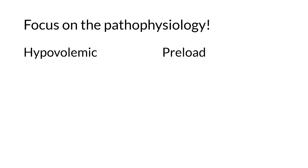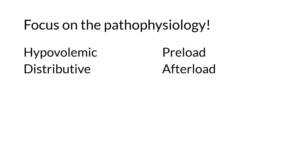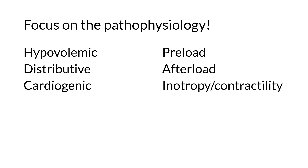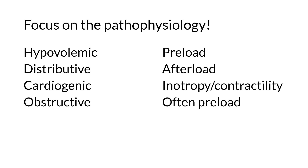Hypovolemic shock results from loss of circulating blood volume and is thus a preload problem. Distributive shock results from inappropriate vasodilation and is thus an afterload problem. Cardiogenic shock results from reduced contractility and is thus an inotropy problem. Extracardiac obstructive shock is variable, but most causes affect the right heart, which is very preload sensitive, so you can think of this as a preload problem as well.